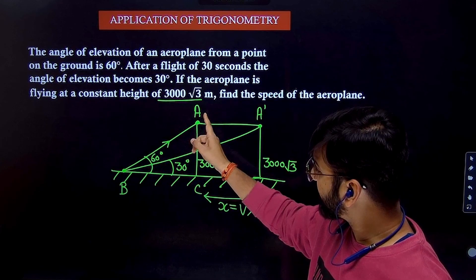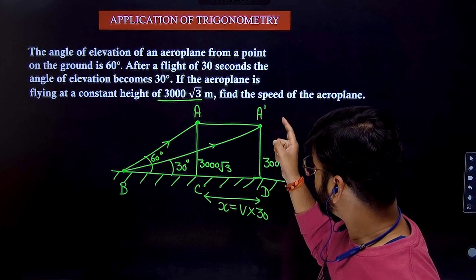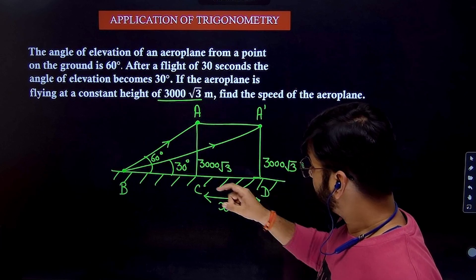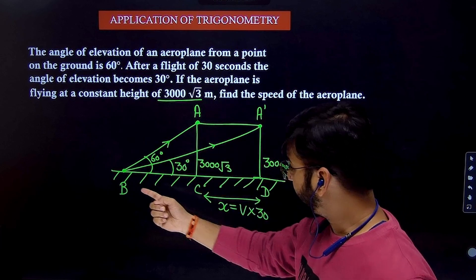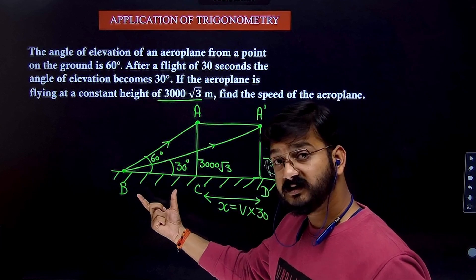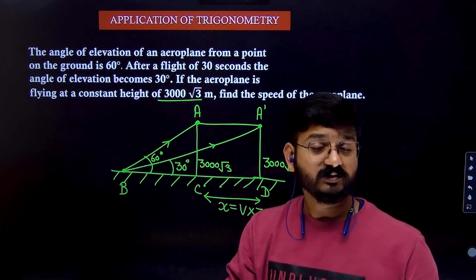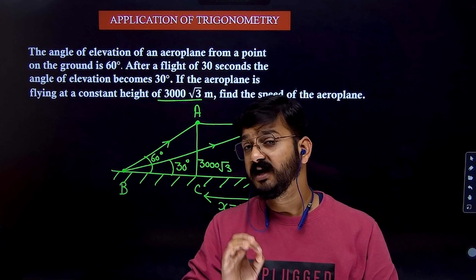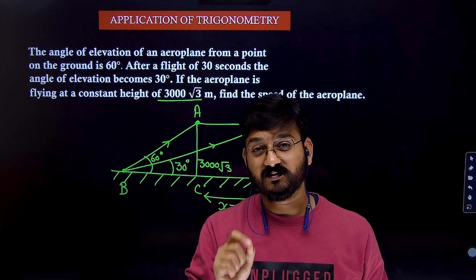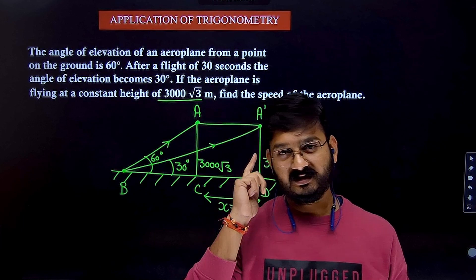So distance is speed into time. Now, again, same thing. Apply tan theta in both the right angle triangles. Apply tan 60 in triangle ABC. From there you will get the length BC. Then apply tan theta in triangle A dash BD. Then you will get tan 30 will be opposite by BD. BD is 30V plus BC. BC you have already calculated. So the only unknown left will be V. So I want all of you to try this question and do write your answer in the comment box and let me know what is the next topic you guys want me to discuss in the class and share with your all friends and classmates. See you guys in the next video.